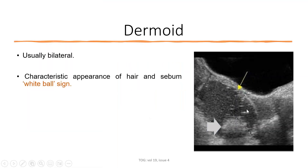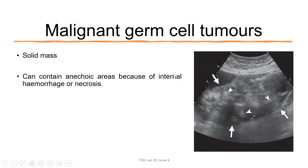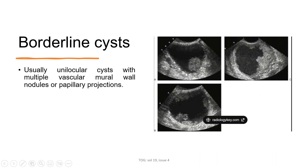Dermoid cysts are also bilateral and show the characteristic appearance of hair and sebum, giving the 'white ball sign.' Malignant germ cell tumors appear as solid masses with anechoic areas due to internal hemorrhage or necrosis. Borderline ovarian tumors are usually unilocular cysts with multiple vascular mural nodules or papillary projections visible on ultrasound.